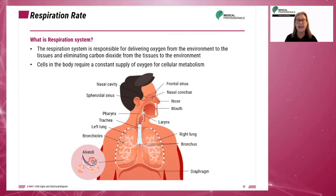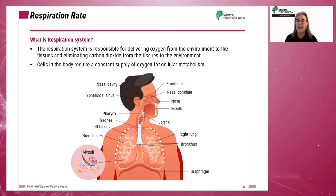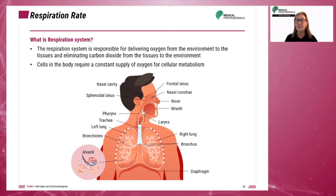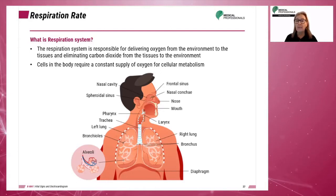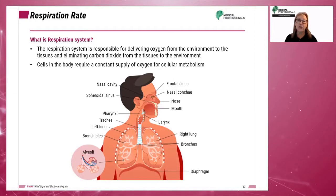As a result of cellular metabolism, the waste product carbon dioxide is produced. Oxygen has to be continually supplied and carbon dioxide continually eliminated, otherwise death occurs.